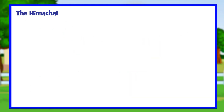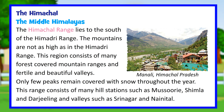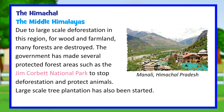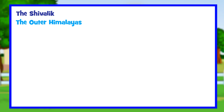The Himachal, or Middle Himalayas, lies to the south of the Himadri range. The mountains are not as high, and the region consists of many forest-covered mountain ranges and fertile, beautiful valleys. Only a few peaks remain snow-covered throughout the year. This range includes hill stations such as Mussoorie, Shimla, and Darjeeling, and valleys such as Srinagar and Nainital. Due to large-scale deforestation for wood and farmland, many forests have been destroyed. The government has created protected areas such as Jim Corbett National Park and started large-scale tree plantation drives.